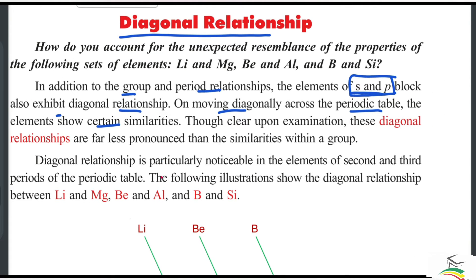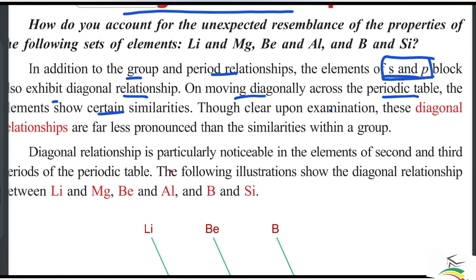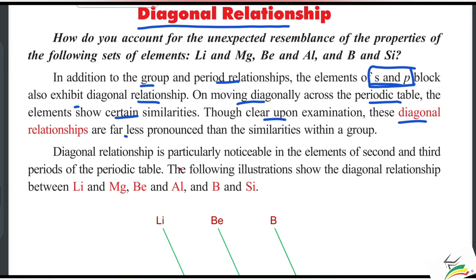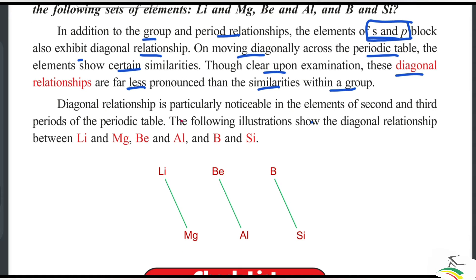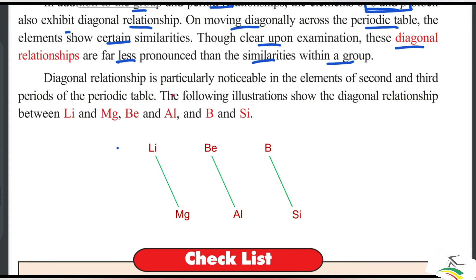Moving diagonally across the periodic table, the elements show certain similarities. However, these diagonal relationships are far less pronounced than the similarities within a group. The diagonal relationship is particularly noticeable in the elements of the second and third periods.